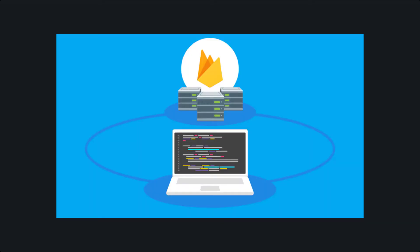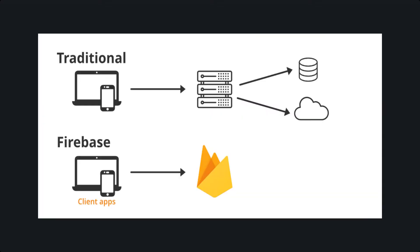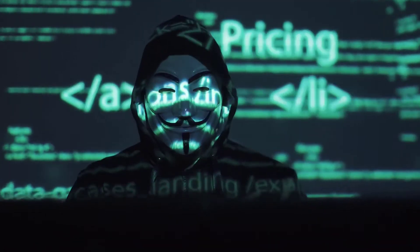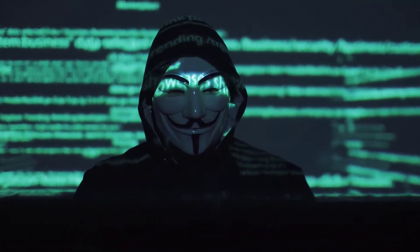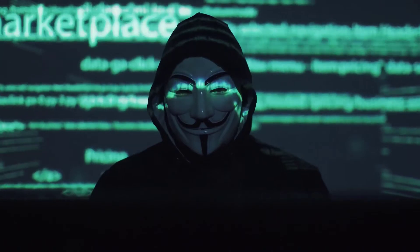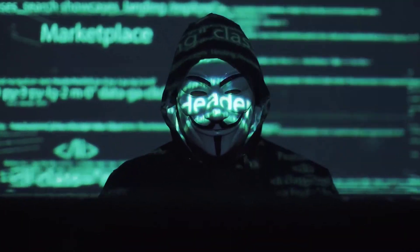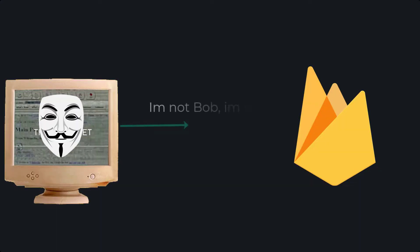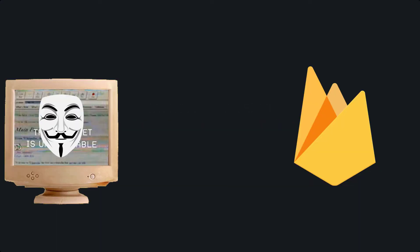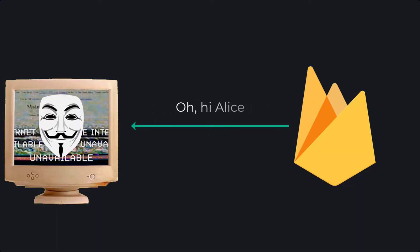Now here's the thing — Firebase is serverless, and if you know the basics of Firestore, you will know that we send requests from the client directly to the database using the Firebase SDKs. So how exactly can we prevent a rogue client from manipulating the JavaScript on the front-end to make a request we did not intend to make to our Firestore database?